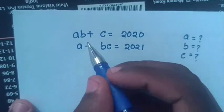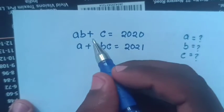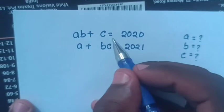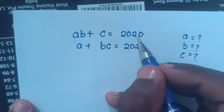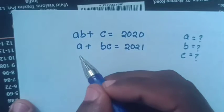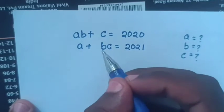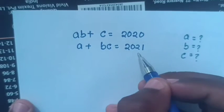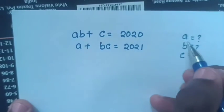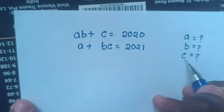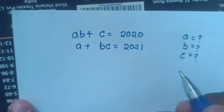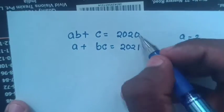Hello. To solve the system of equations: AB plus C equals 2020, and A plus BC equals 2021, find the value of A, B, and C.